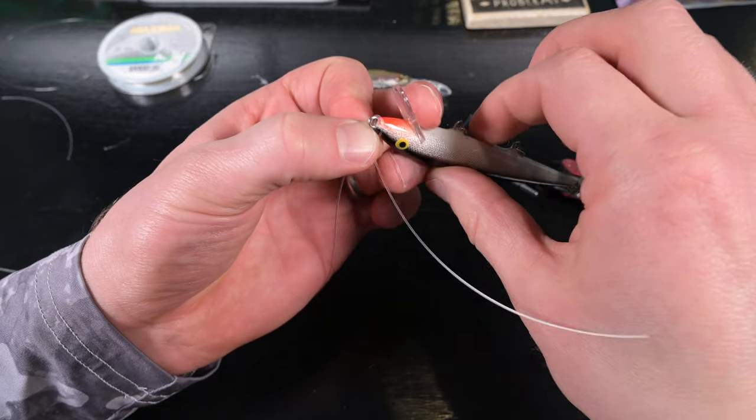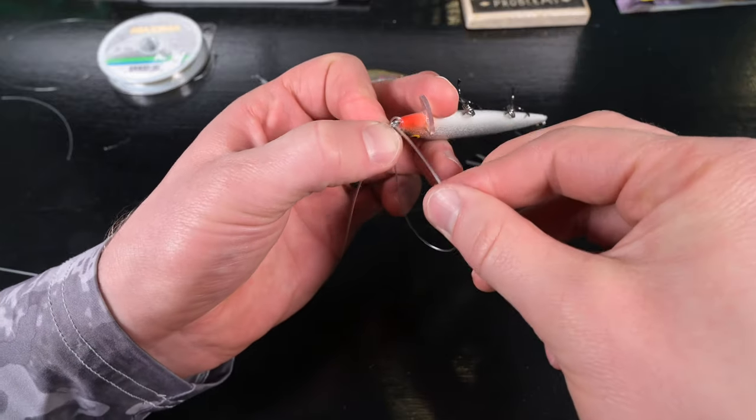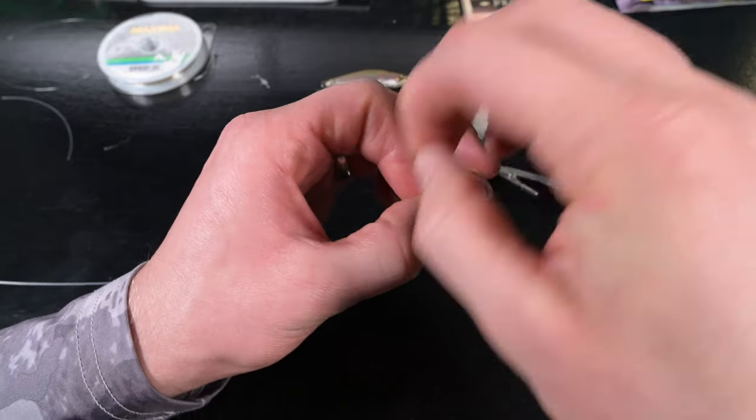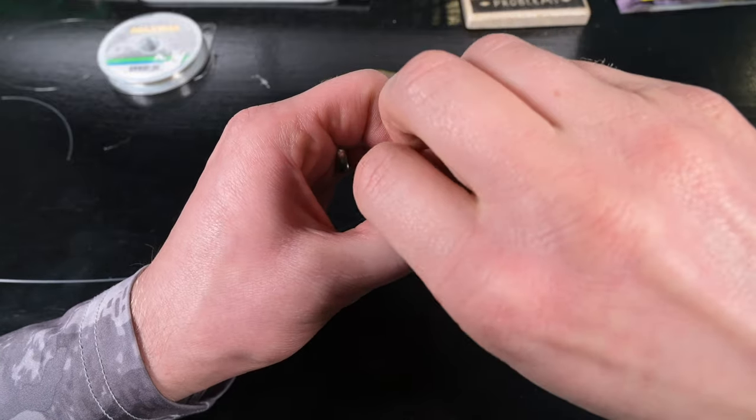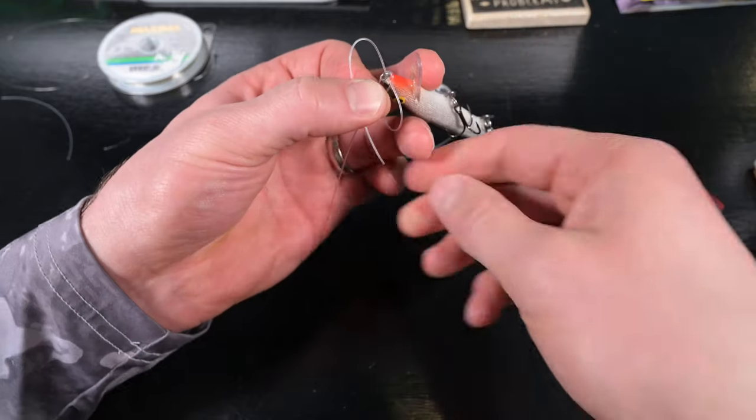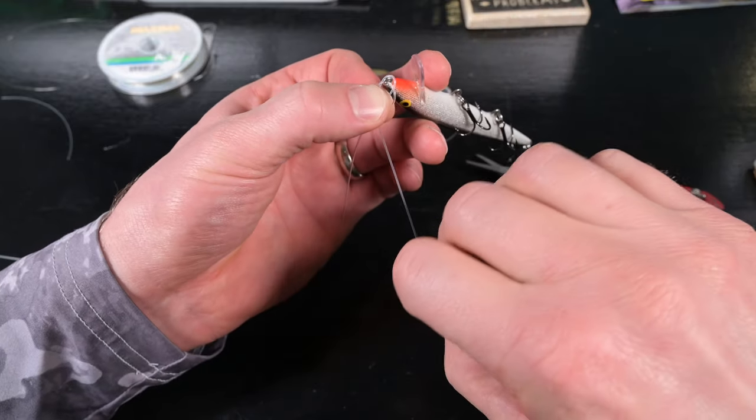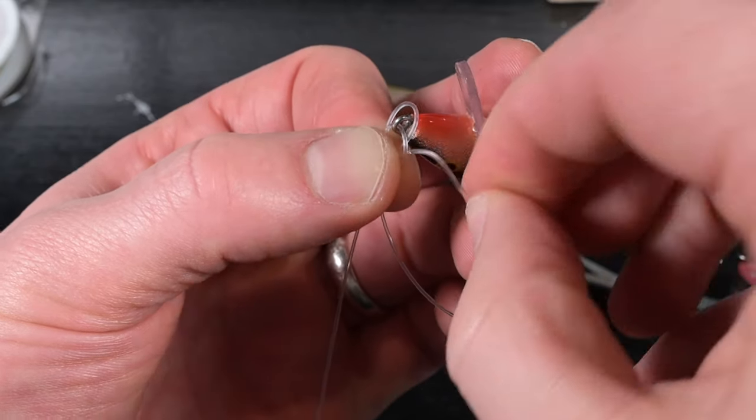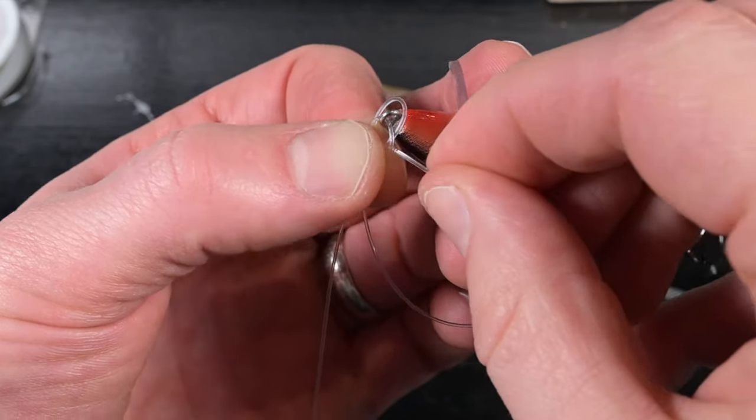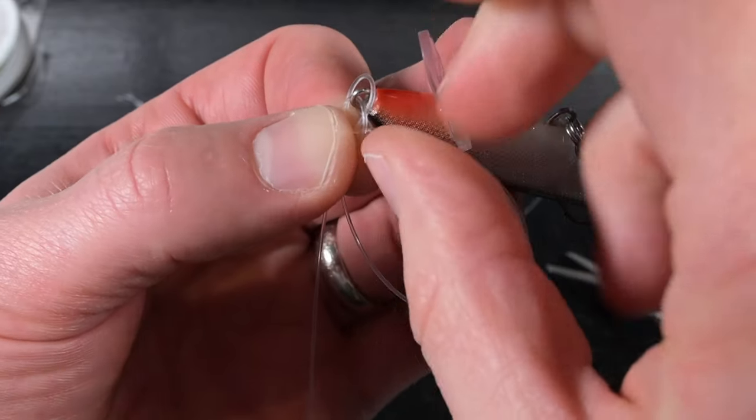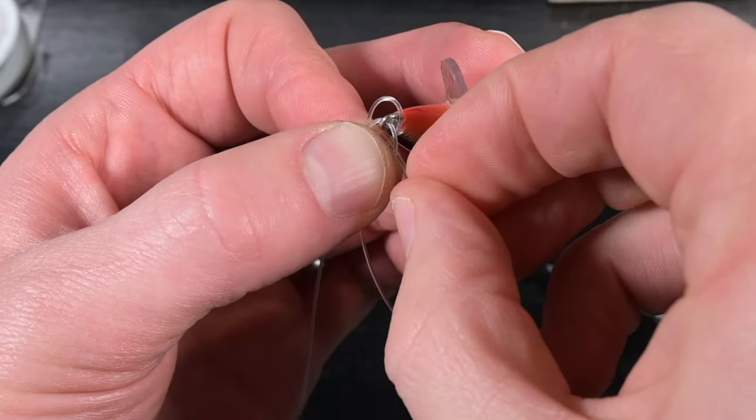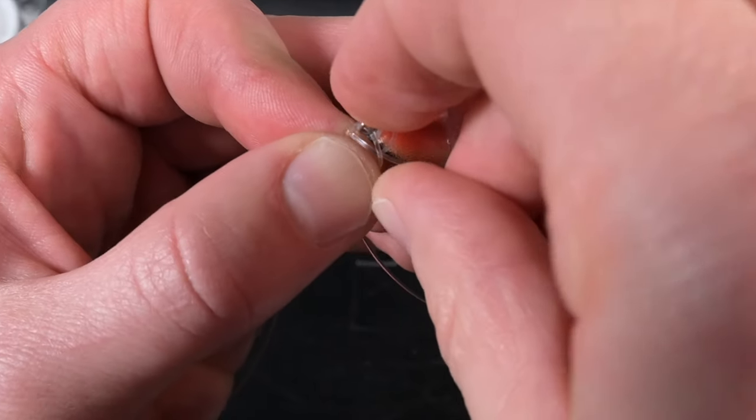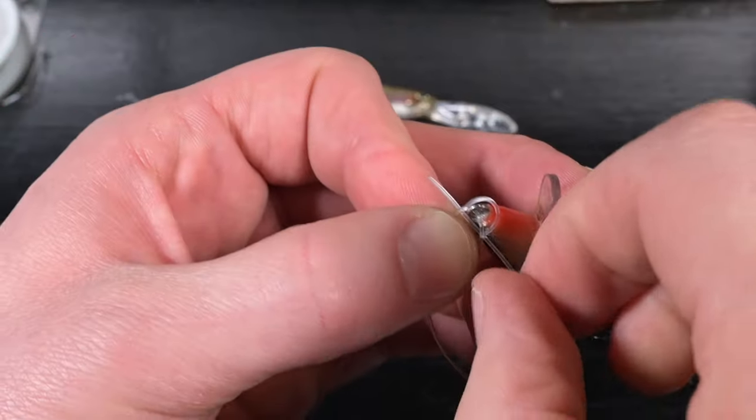We keep that lure in there and pass the bitter end through. We wrap it back behind the standing end, using my thumb and pointer finger to apply tension and tighten the secondary loop we just made. Then we split the two loops.